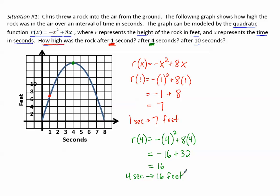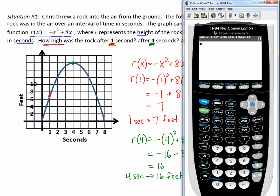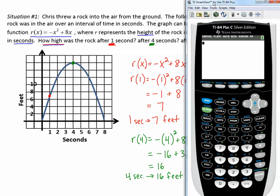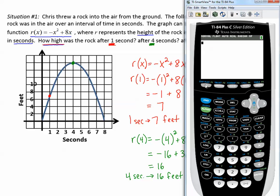I can also use my calculator to help evaluate the function. Let's go to the calculator and in y equals, let's plug in this function. So I'll type negative x, to get the squared, the exponent of two. I see this button that says x squared. That will give me the squared. And then plus 8x. And now we'll go to the table to see the values.